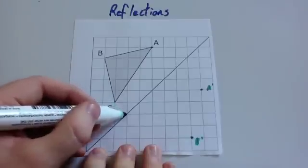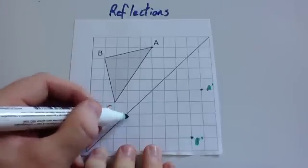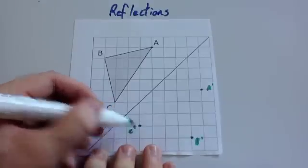Let's then have a look at C. C is 1 diagonal to the mirror line. So you go another 1 diagonal, and you get there. So that's C dash.